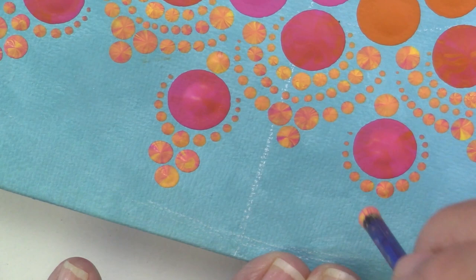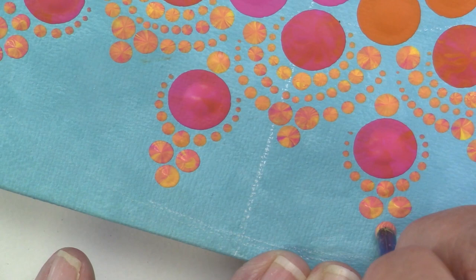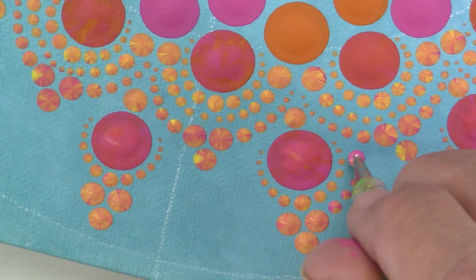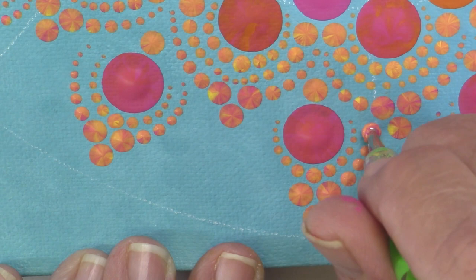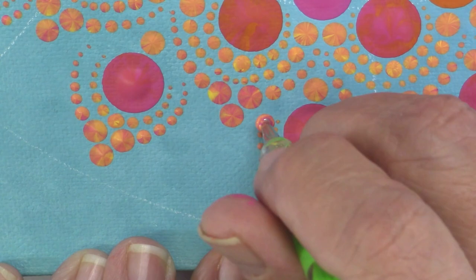And now I'm ready using the largest of my nail dotters and walking them around. Now one thing that I do. Sometimes as you're walking the dots they're not always the same on each side. And I do sometimes go in with a smaller tool and just finish them up and even them up a little bit. So that I get a nice look.